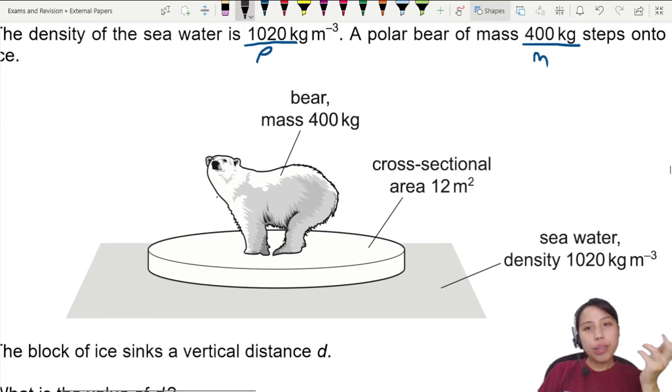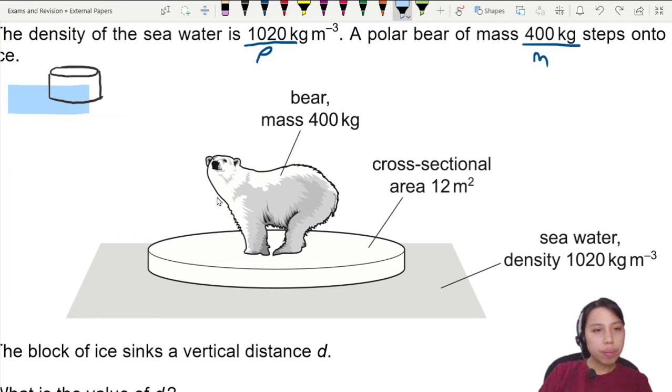Imagine you have water and you have this block of ice, let's exaggerate a bit. It's this thick, so the water kind of goes until here. And then once the polar bear comes and steps on this block, maybe it will sink down a little bit, so it goes down. I can draw another one there, sinks lower.